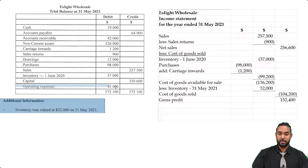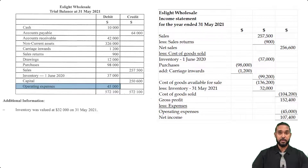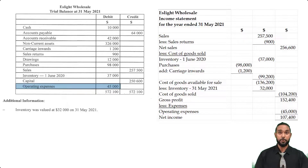The last thing to do is subtract your operating expenses from your gross profit, and that gives us a net profit of $107,400. If you want to check out my earlier video on how to prepare an income statement or the trading section from scratch, I'm going to put a card up there and the link in the description below, so be sure to check that out as well.